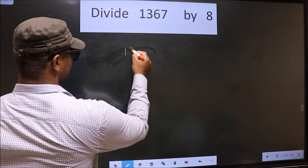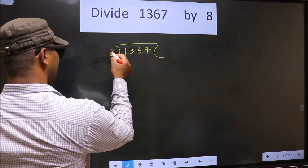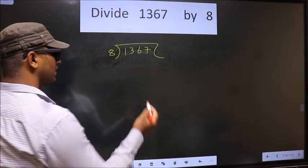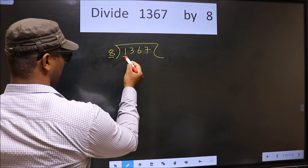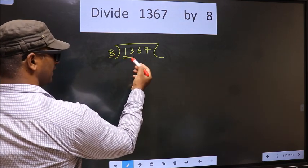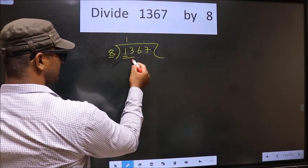That is 1367 by 8 here. Next, now here we have 1. Here 8. 1 is smaller than 8, so we take two numbers that is 13. A number close to 13 in 8 table is 8 once 8.